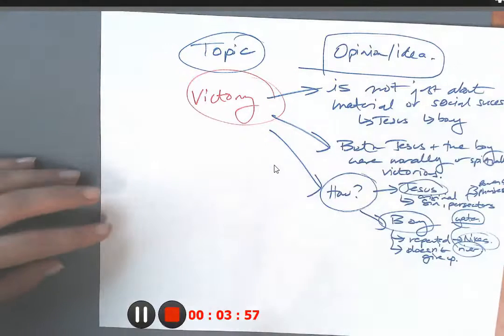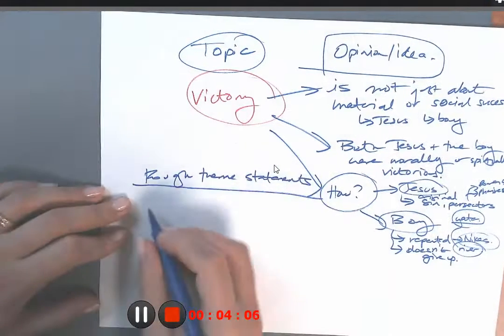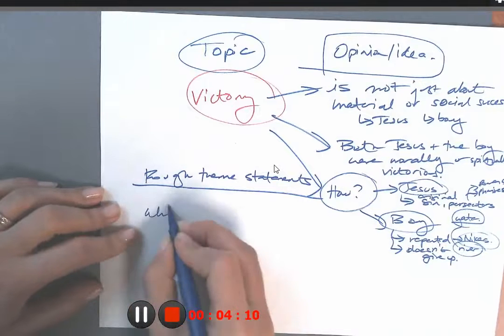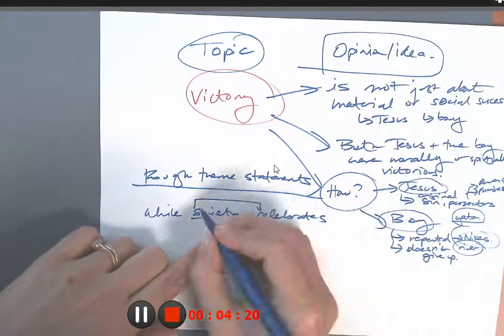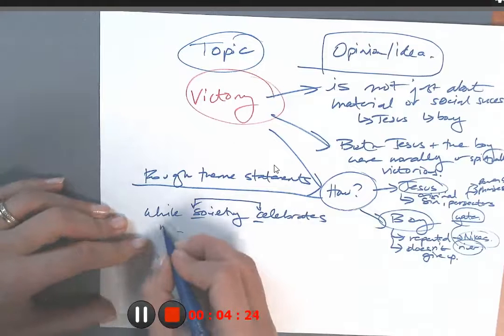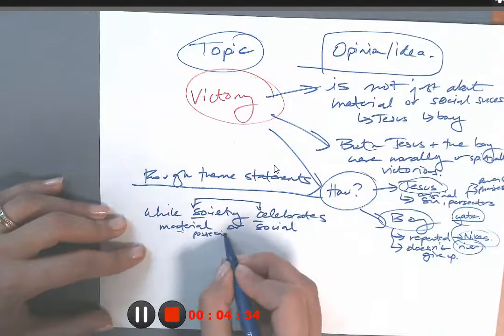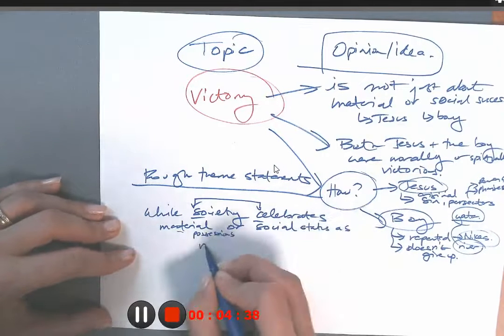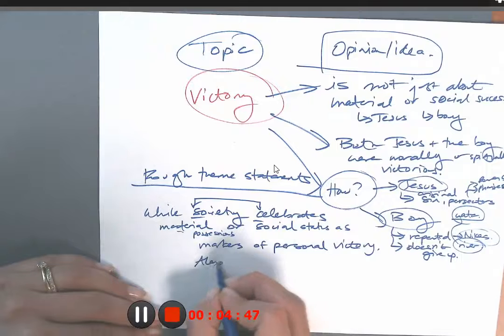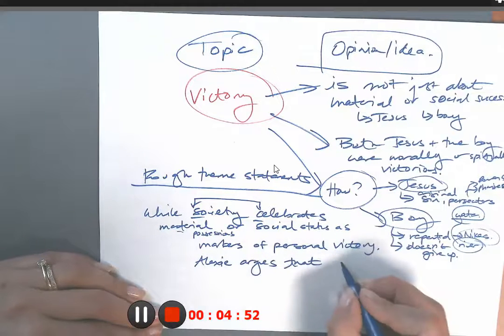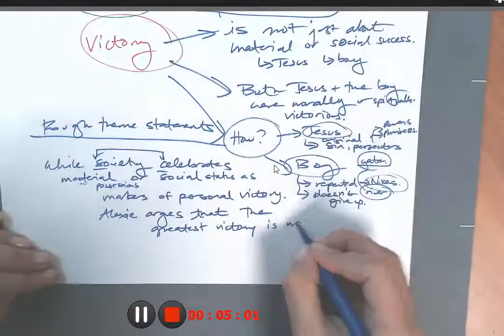So I'm going to start brainstorming rough draft theme statements. So putting it all together, I'm going to say, okay, while society celebrates. See what I did there? A little bit of alliteration. Okay. Even though they're different letters, same sound. While society celebrates material possessions or social status as markers of personal victory. Alexie argues that the greatest victory is moral or spiritual.